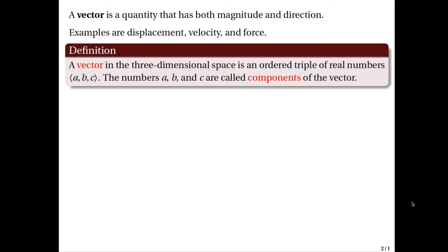Or more formally, we define a vector in the three-dimensional space as an ordered triple of real numbers A, B, C, written this way. These numbers A, B, and C are called the components of the vector.